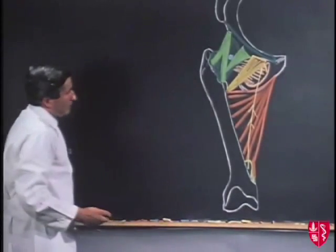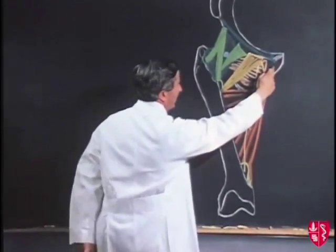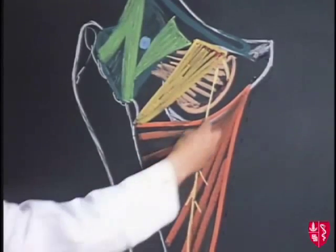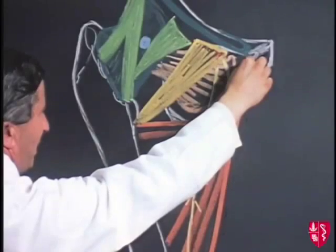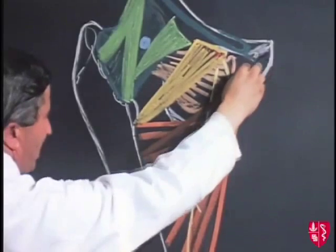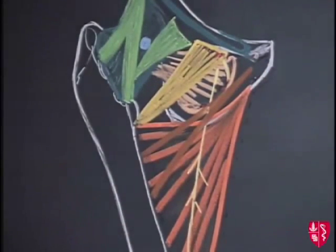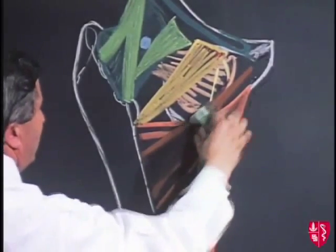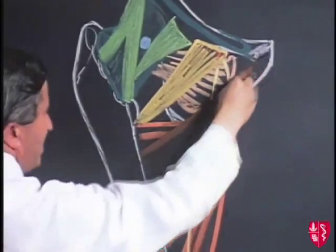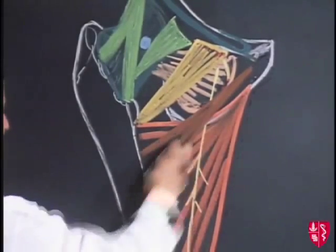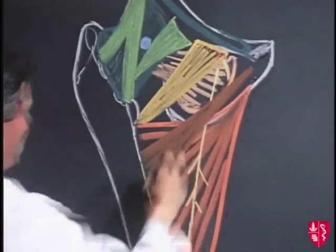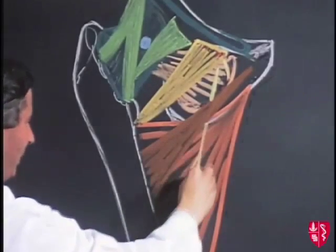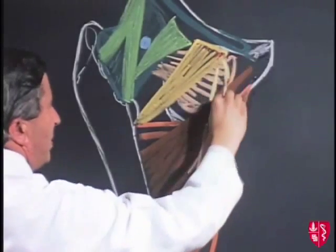The adductor brevis arises from the lower part of the body of the pubis and passes downwards and laterally in front of the posterior division of the obturator nerve and in front of the adductor magnus, to be inserted into the linea aspera. It is an adductor of the hip joint and, because it passes posterior to the femur, also has a lateral rotator action. It receives its nerve supply from either the anterior or the posterior division of the obturator nerve.